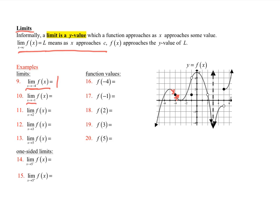When x approaches negative 1, I talk just about the approaching — it doesn't matter what's there when I get there. Am I approaching from the left side the same y-value as from the right side? The answer is 4. So this limit would be 4. It doesn't matter that this point is defined down here; we just need to know that the limit where we're driving to is equal to 4.